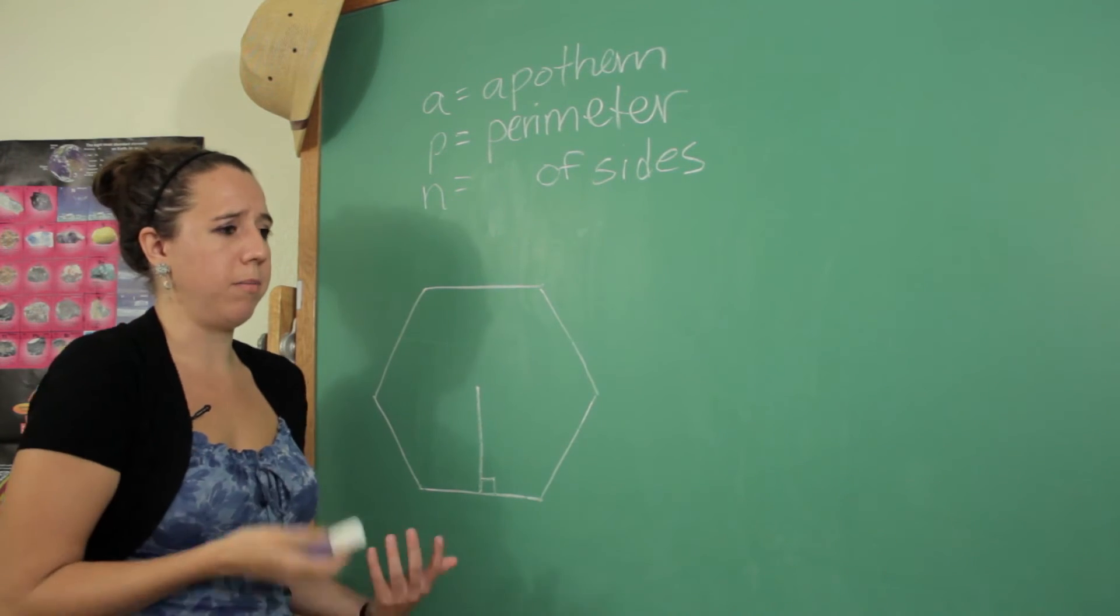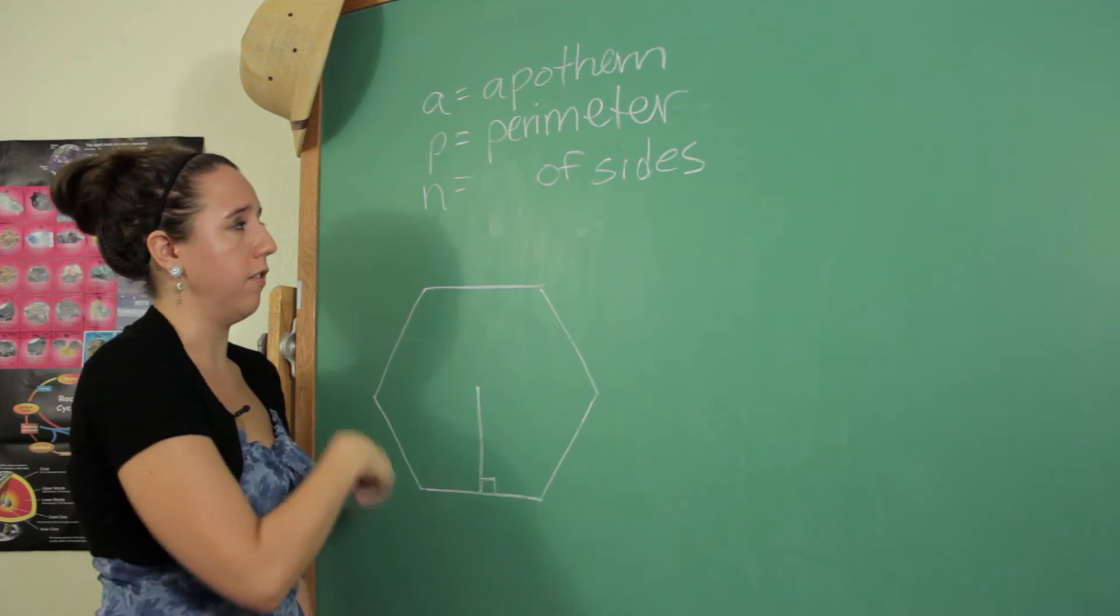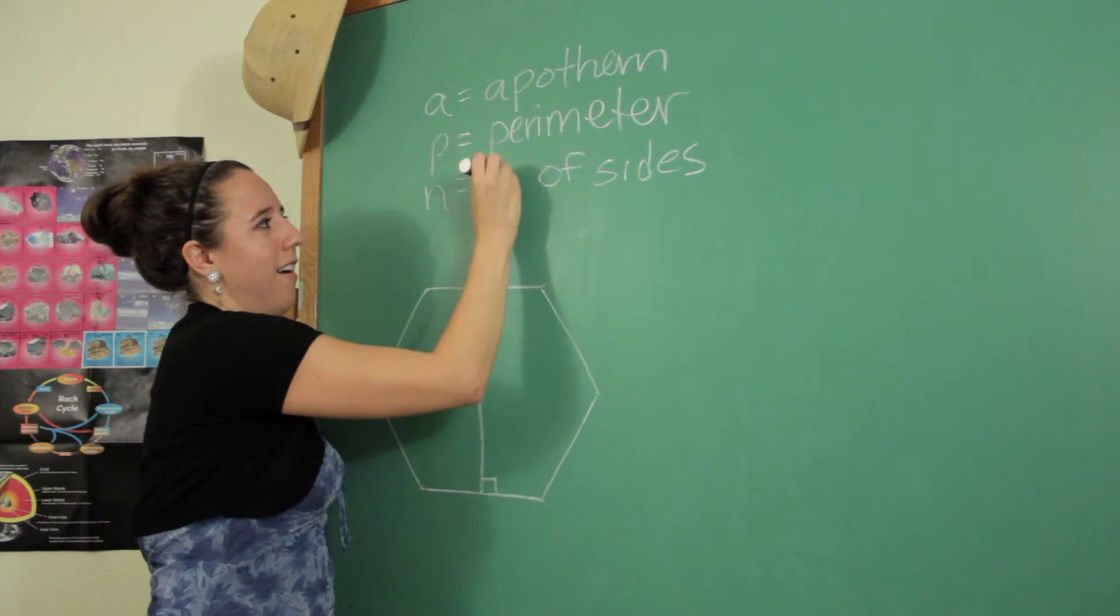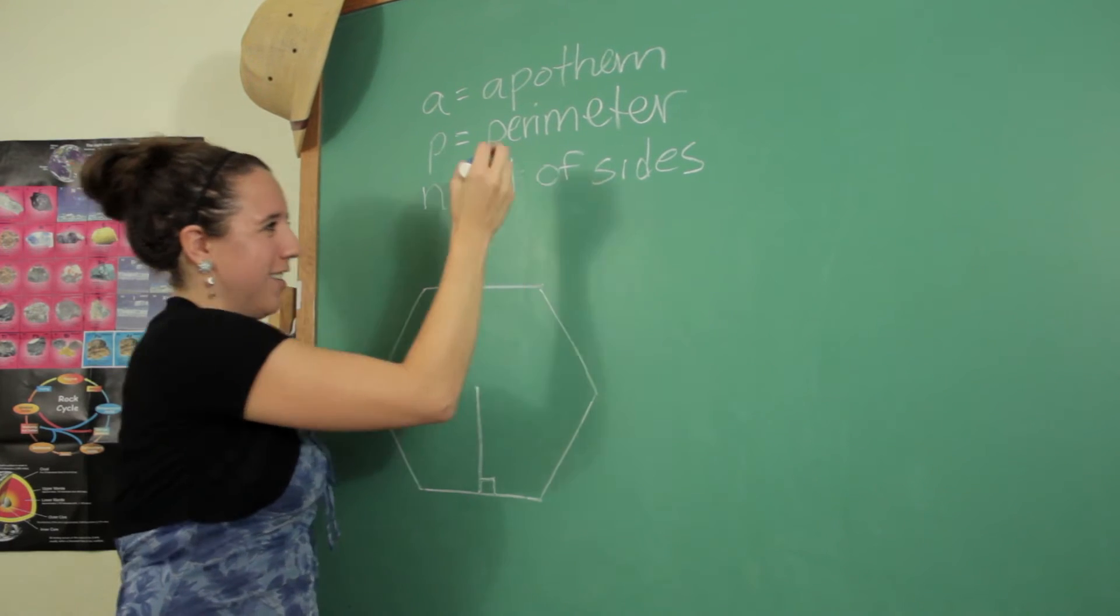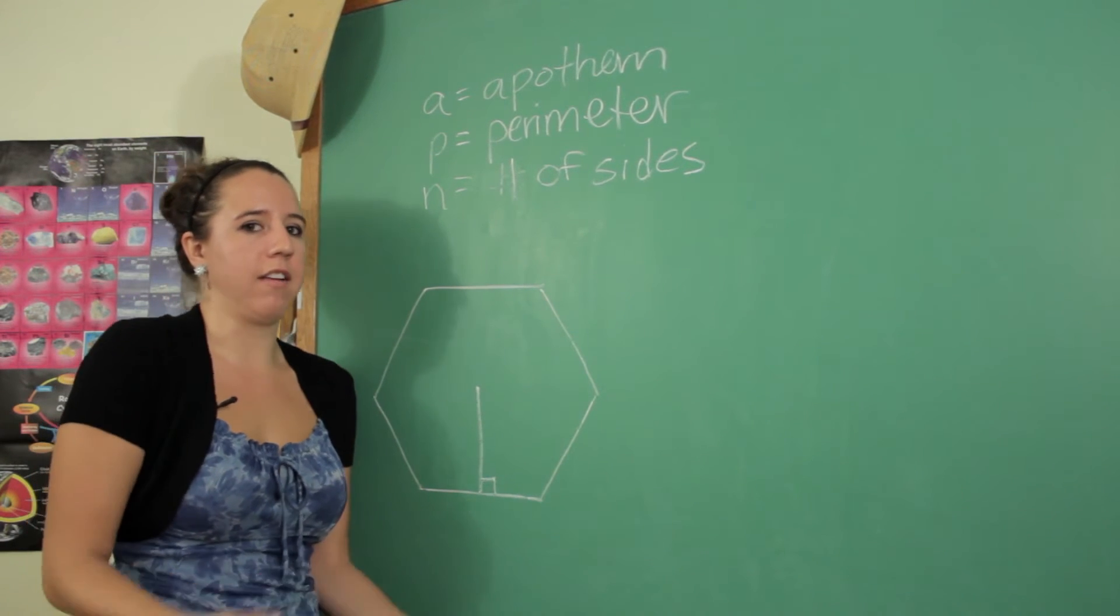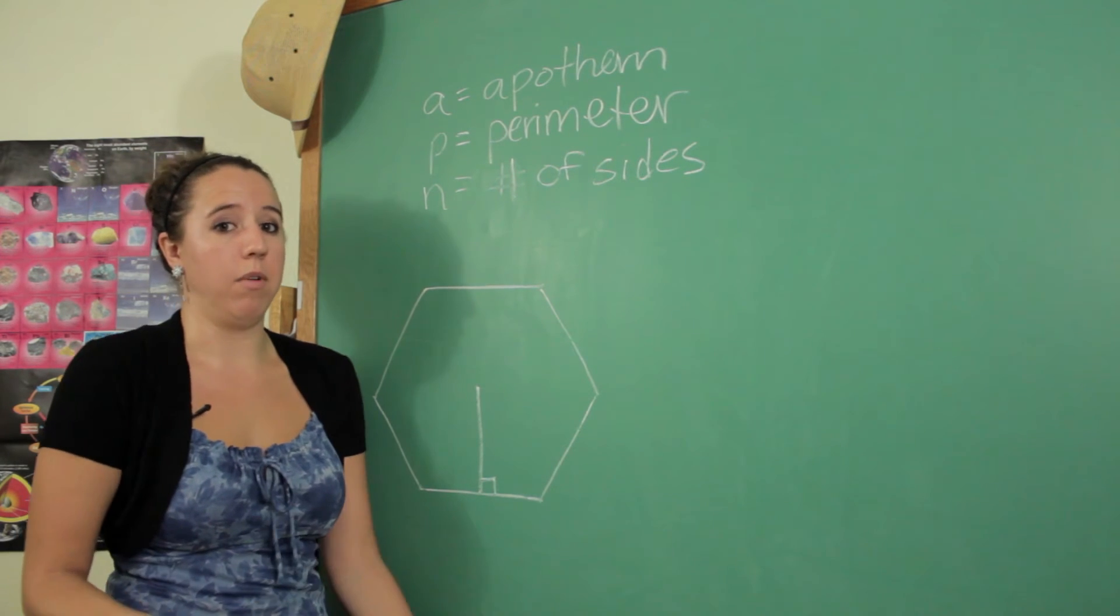So the perimeter is pretty self-explanatory. It's just the distance around and n we're going to call the number of sides. That's given just by the fact that if it's a hexagon it's going to be six sides and n will equal six.